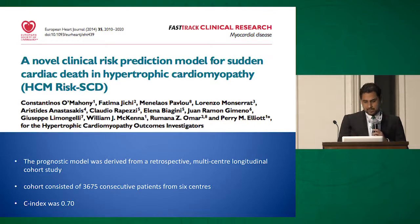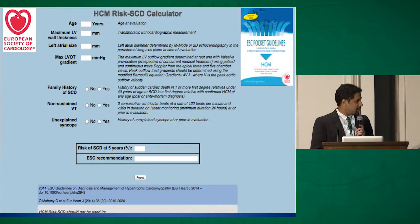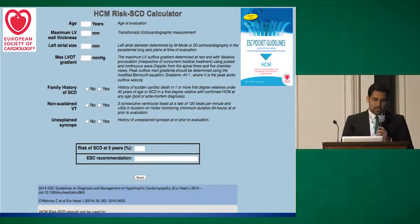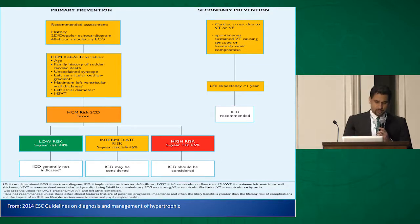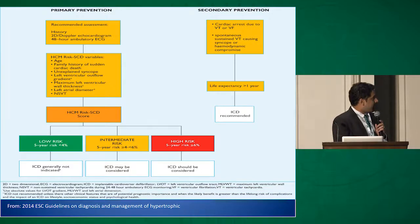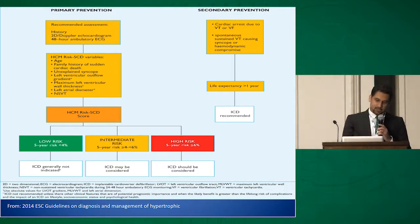To overcome these limitations, the Europeans tried to come up with a newer risk prediction model. They had a retrospective multicenter cohort study looking at around 3,000 patients from six centers across Europe, and they were able to improve the C-index to 0.7. Their risk calculator includes some newer variables: age, maximal LVOT gradient, and left ventricular wall thickness as a continuous variable, while the rest of the risk factors remain the same. Using this calculator, you get a five-year risk and can stratify patients as low, intermediate, or high risk.